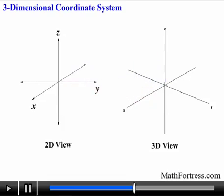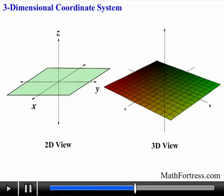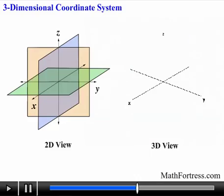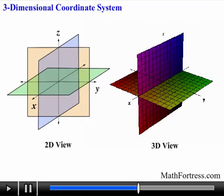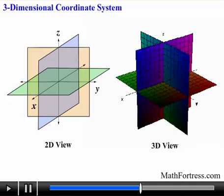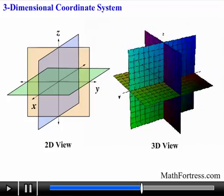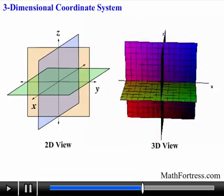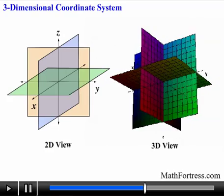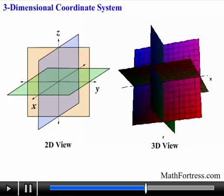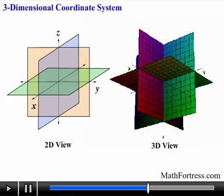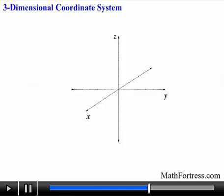In addition, the three coordinate axes also determine three coordinate planes. The xy-plane contains the x and y-axes, the yz-plane contains the y and z-axes, and the xz-plane contains the x and z-axes. Together the three coordinate planes divide space into eight regions called octants — analogous to the quadrants of a two-dimensional coordinate system. The first octant is determined by the positive axes. If you are having a hard time visualizing this, just look at any bottom corner of a room: the wall on your right is the yz-plane, the wall on your left is the xz-plane, and the floor is the xy-plane.